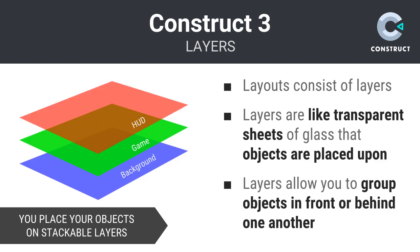Each layout consists of one or more layers. Layers allow you to group objects together so that they may be placed and therefore appear to the player above or below one another. Just like layers to a cake or a lasagna, groups of game components can be commingled into stackable sheets that can be arranged to be above or below relative to one another.